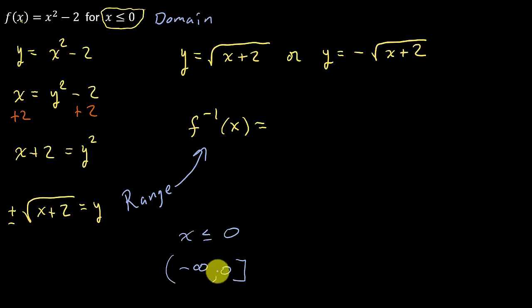That's just taking this and writing it in interval notation. Okay. So if this is the domain of the original function, which one of these has a range negative infinity to 0? Well, we know that the square root, we're always going to get a positive number.